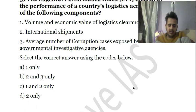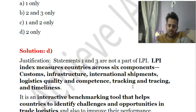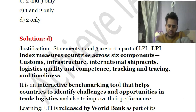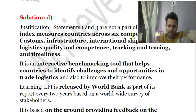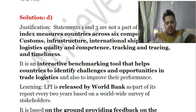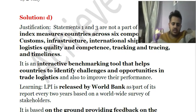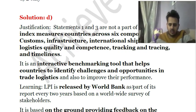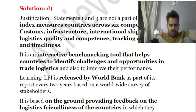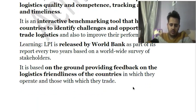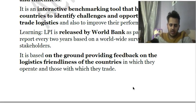The Logistics Performance Index measures a country across six components: customs, infrastructure, international shipments, logistics quality and competence, among others. It is released by the World Bank and is used by countries to identify challenges and opportunities in trade logistics, and by foreign investment companies to judge the logistics sector of a particular country. It provides on-ground feedback on the logistics-friendliness of a country.